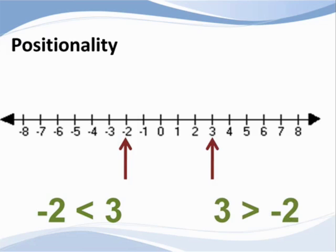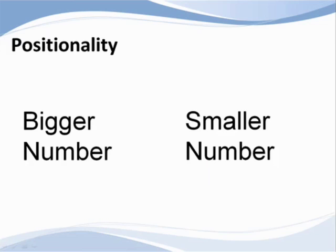Said another way, 3 is greater than negative 2. Both statements say the same thing. Another way to think about the inequality symbol is that the head of the arrow points to the smaller number, the one that is farther to the left on a number line.